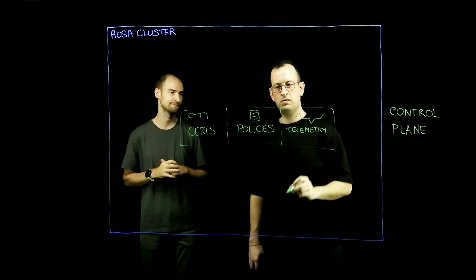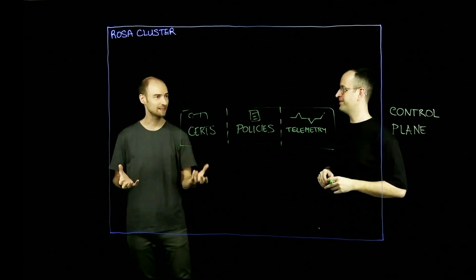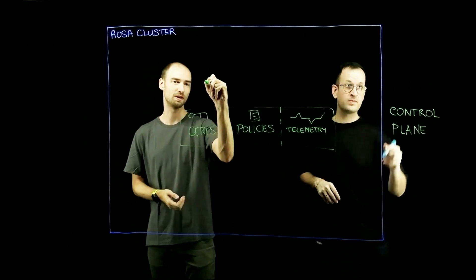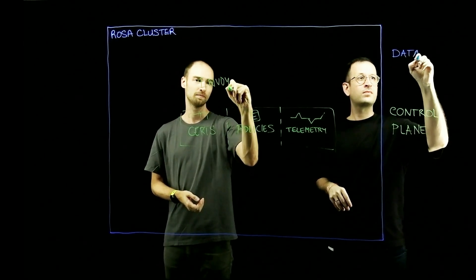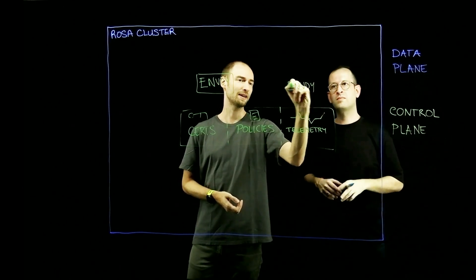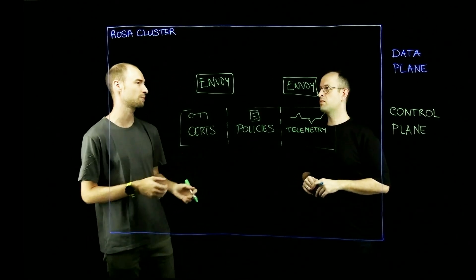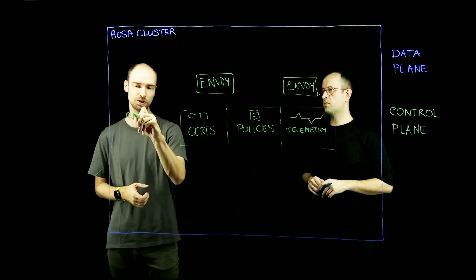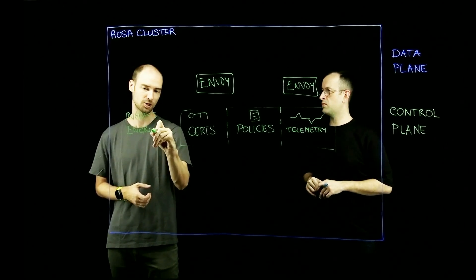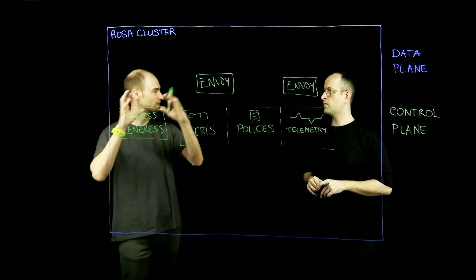The control plane is the brain of the Service Mesh. The second major component is the data plane, which is made up of Envoy proxies. These Envoy proxies are deployed automatically by the Service Mesh and sit next to application containers. The data plane also includes your ingress and egress gateways — the entry and exit points of the Service Mesh — so any traffic flowing in and out, whether from the public internet or to another service in public cloud, would flow through those gateways.